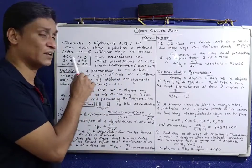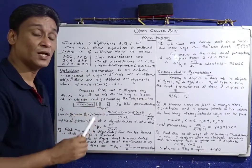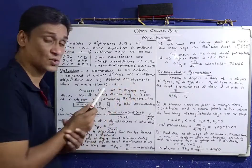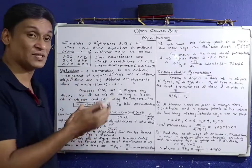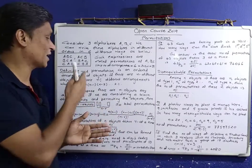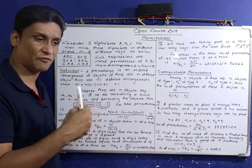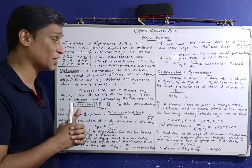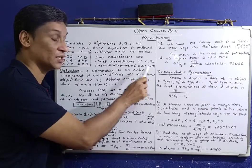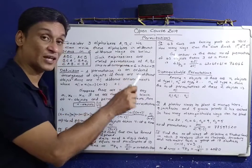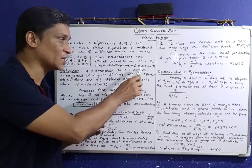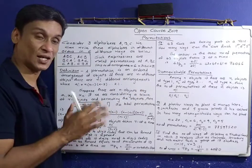We will arrange them in any way. Here the number of arrangements is 6. For 3 objects, we have 3 cards. The number of arrangements is 6 — that is 3 into 2 into 1, that is 3 factorial.